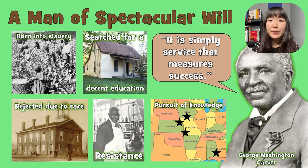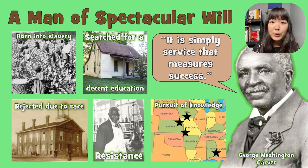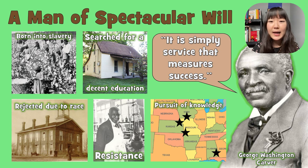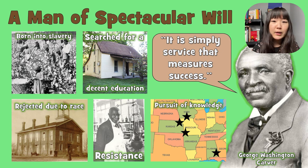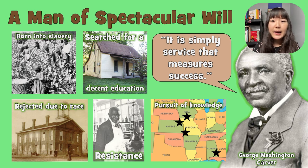When he moved to Alabama at the request of Booker T. Washington to teach at the Tuskegee Institute, he also faced some pushback. All he cared about was bettering what he considered his people — the Black community. Money didn't drive him. Fame didn't drive him. It was just goodwill and bringing people up from poverty. A quote from him on this slide is: 'It is simply service that measures success.' He used science as a way to better the community, and I think that's what science is truly for.